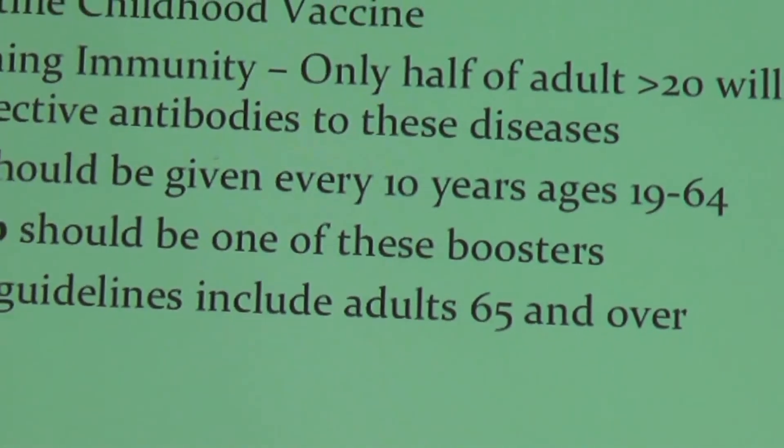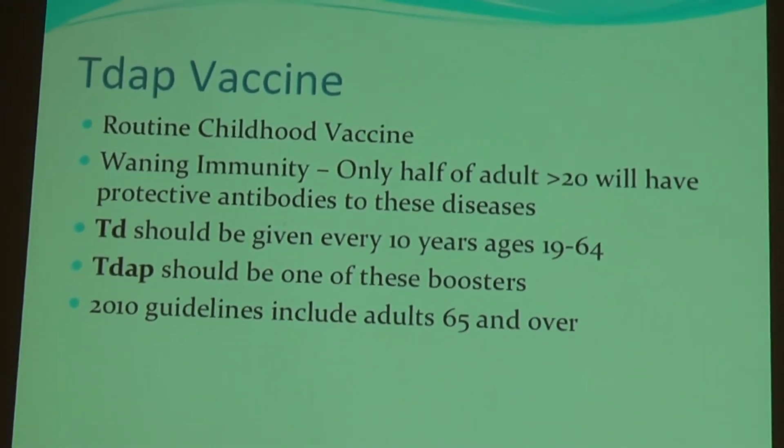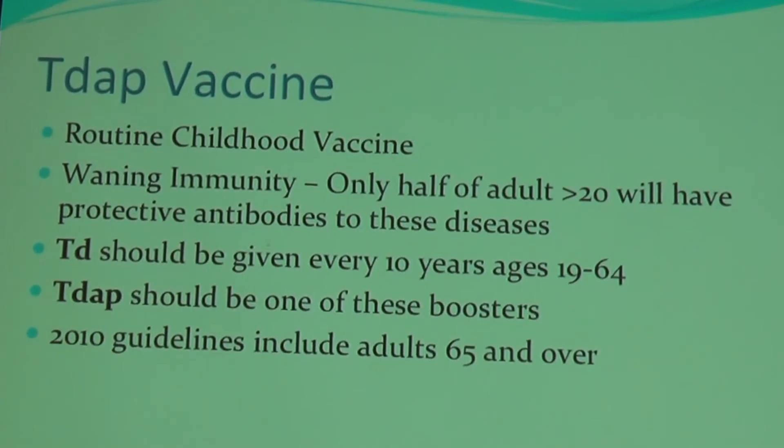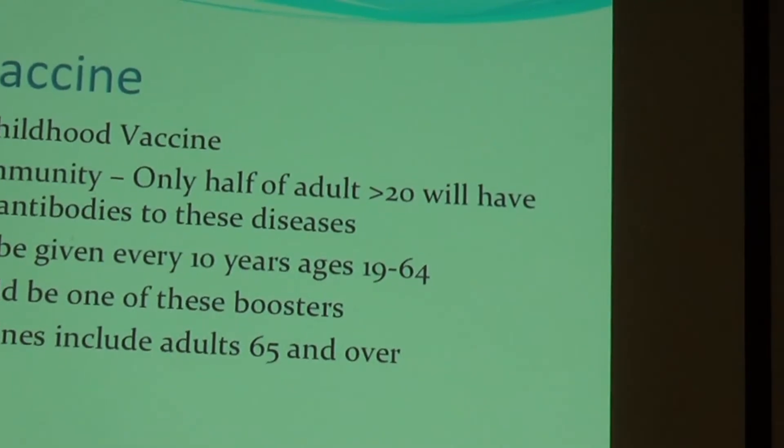A little about the Tdap vaccine: there's a version that is a routine childhood vaccine, but there is waning immunity — about half of adults over age 20 will have protective antibodies against these diseases. The tetanus-diphtheria booster should be given every 10 years. We're now recommending that the Tdap — the combination including pertussis — should be one of these boosters, replacing one of the Td boosters every 10 years. These guidelines since 2010 also include adults over the age of 65. Side effects are usually mild: pain or tenderness at the injection site, mild fever, headache, or fatigue.